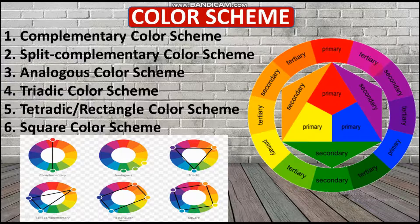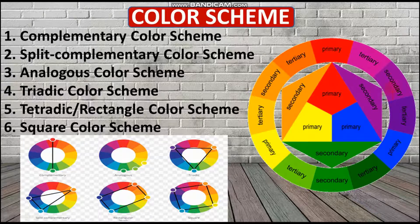The fourth is the tetradic or rectangle color scheme. You form a rectangle on the color wheel, leaving three colors on the long side and one on the short side. For example, select red (primary), go to yellow (primary), then to green (secondary), then to purple (secondary) — that forms a rectangle with two primary and two secondary colors. Similarly you can form a rectangle using four tertiary colors.